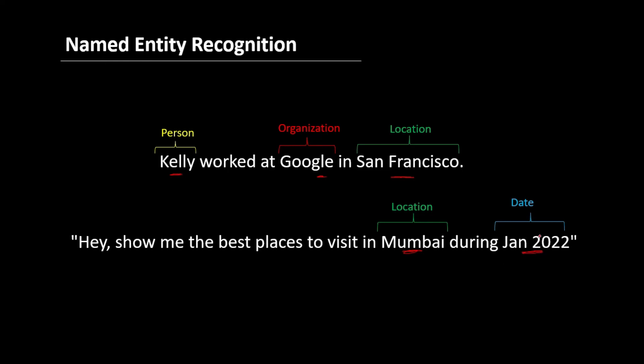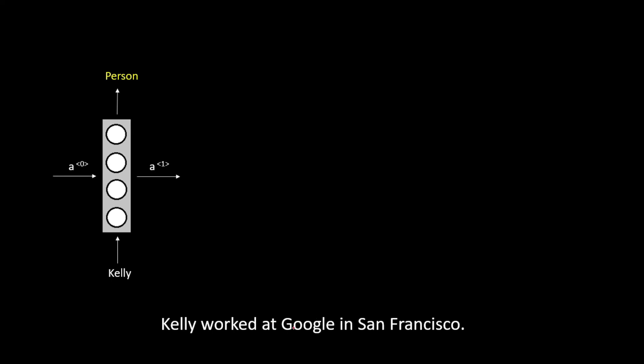So let's say we are making this application. Now instead of passing this entire sentence, we will only pass the first word to this RNN. Now this RNN will produce one output and it will also produce an output activation and it will also take an input activation.